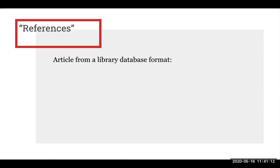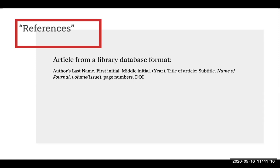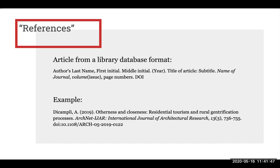Now let's look at the article reference format. It will be slightly different than the e-book format. It includes the author's last name, first initial, middle initial, the year, the title of the article, its subtitle, the name of the journal, the volume and issue number, the page numbers, and the DOI. Again, gather as many of the elements as you can, and if there is no information provided for a certain element, that's okay. Here's an example of an article reference with the pieces plugged in, including the author's last name, first initial, year, title and subtitle, the journal, volume and issue numbers, the page range, and the DOI.